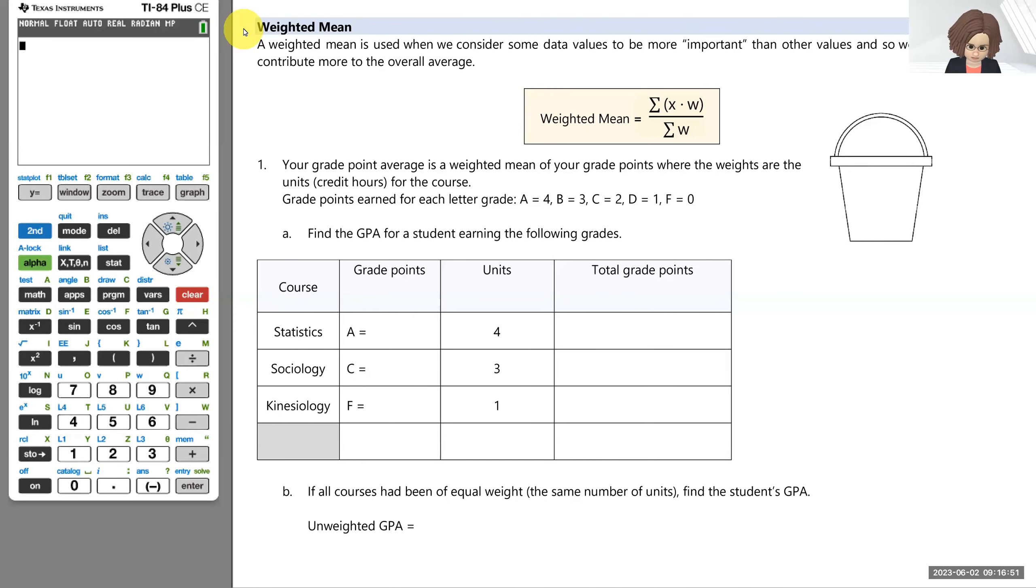Welcome. We're now ready to take a look at what's called a weighted mean. A weighted mean is used when we consider some data values to be more important than other values, and so we want them to contribute more to the overall average.